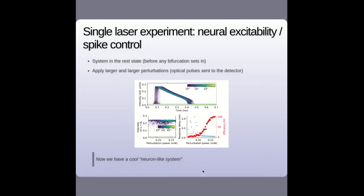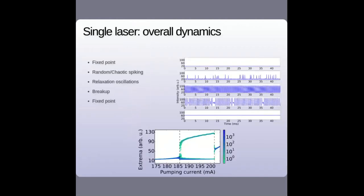This shows an excitability threshold very much like what you find in biology: small perturbations elicit no response, large perturbations elicit a response every time. We now have a neuron-like slow-fast system. Looking at the full bifurcation diagram as a function of control parameter: first a fixed point, then random or chaotic spiking, then more frequent spikes leading to a relaxation oscillation regime with periodic pulsing, then periodicity breaks up with gaps, until reaching a new stationary state. The bifurcation diagram features fixed point, mixed-mode oscillations with occasional spikes, chaos, relaxation oscillations, and a final fixed point.